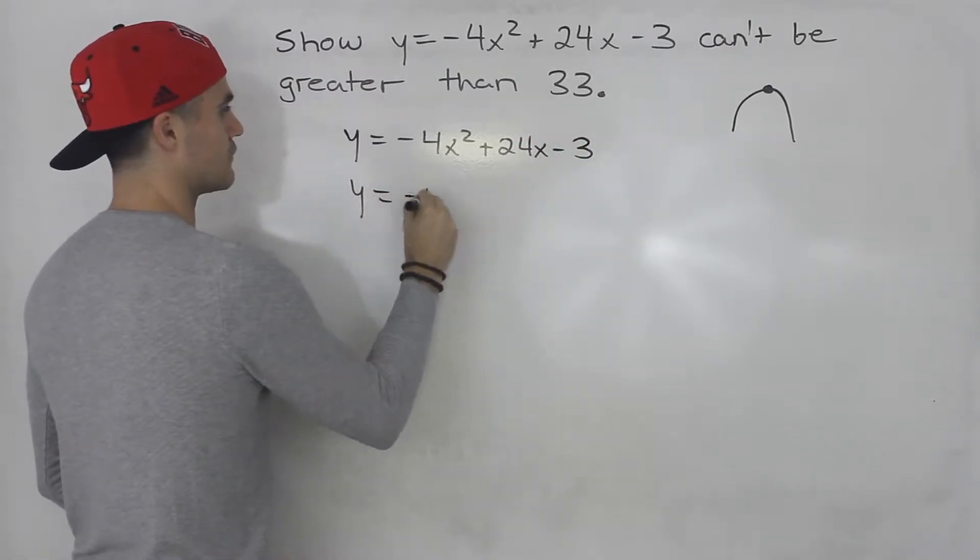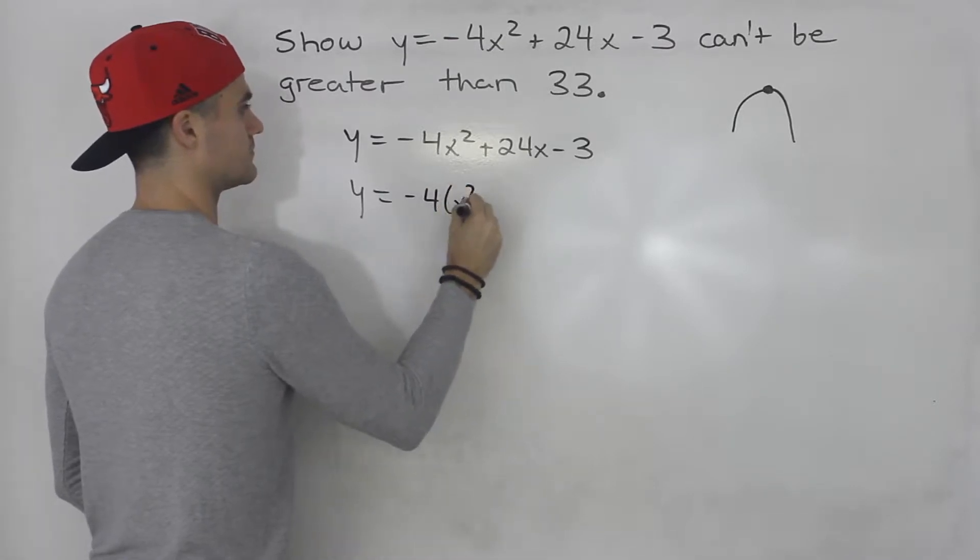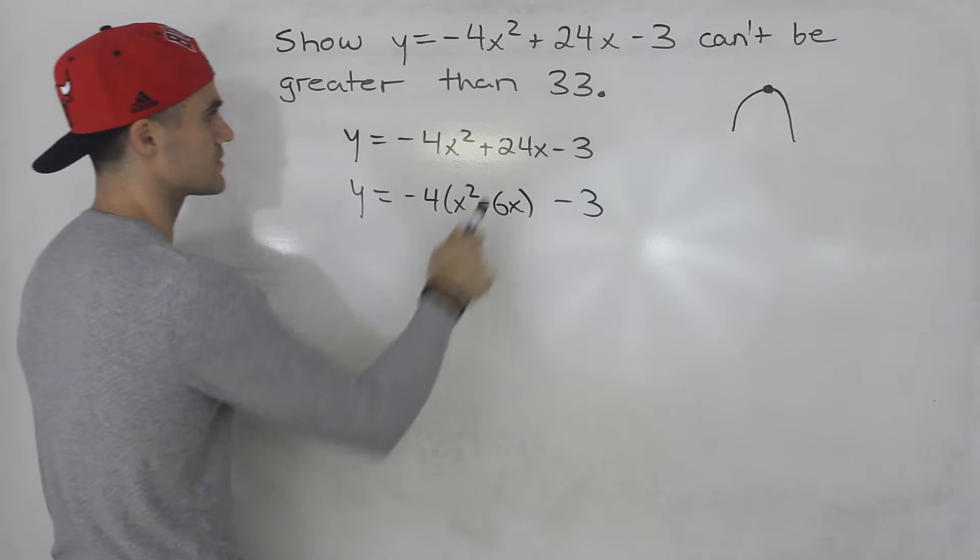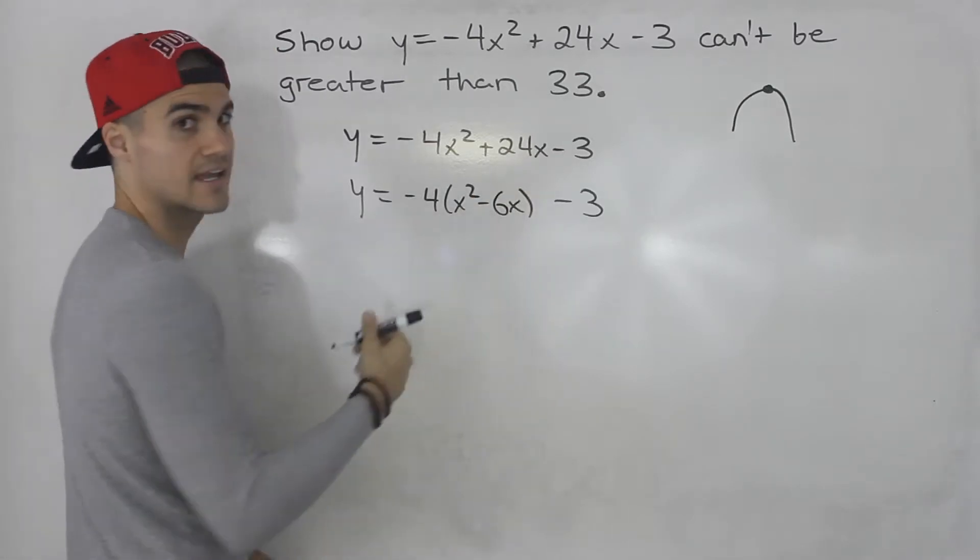Let's factor out a -4 here from the first two, keep the -3 outside. So 24x divided by -4 gives us -6x.